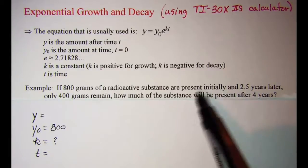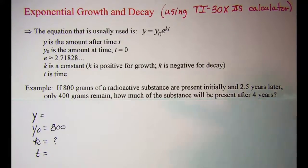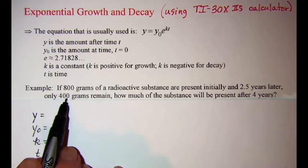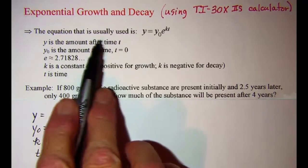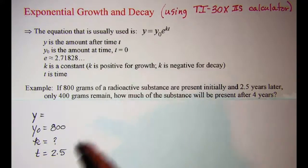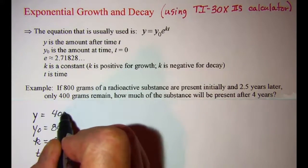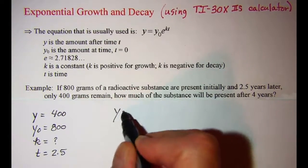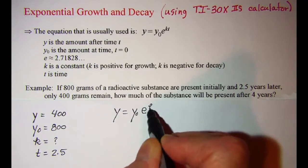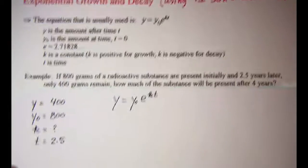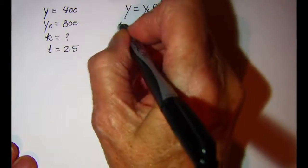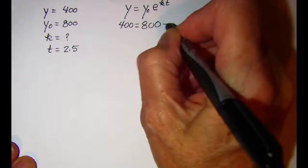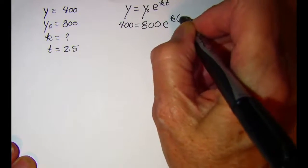And 2.5 years later we only have 400 grams, so after 2.5 years we have 400 grams. So now we'll put these values into our equation y equals y sub zero times e to the kt. So 400 equals 800 e to the k times 2.5.